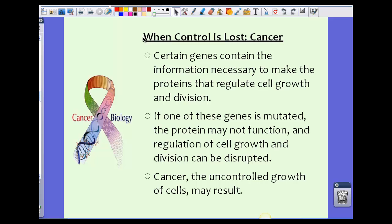Now if unfortunately control is lost inside the cell at these checkpoints, then what is happening is something called cancer. Sometimes certain genes contain the information necessary to make the proteins that regulate cell growth and division. However, if one of these genes is mutated, the protein may not function, and regulation of cell growth and division can be disrupted.